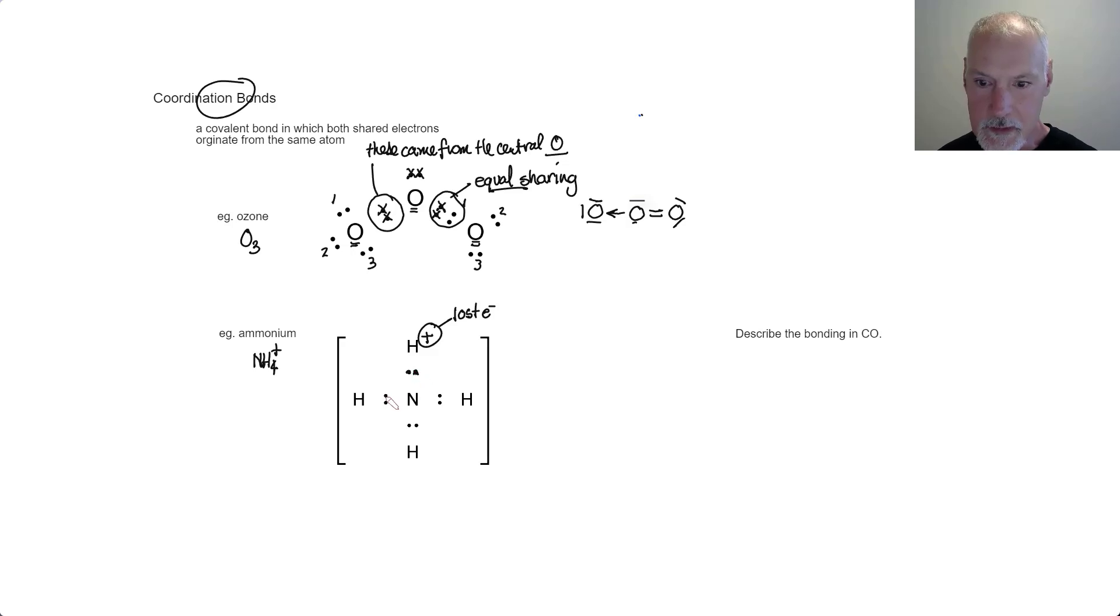So if I'm going to identify nitrogen's electrons, let's use the dots again. One, two, three, four, five. And the hydrogen's there, there, and there. And this hydrogen doesn't have any electrons because it's lost it.